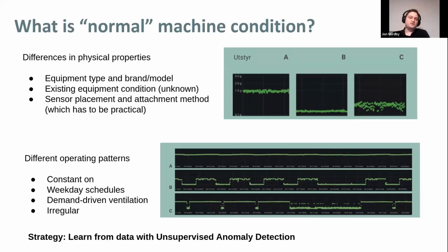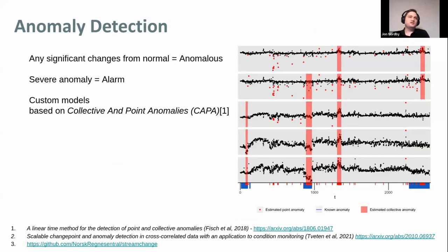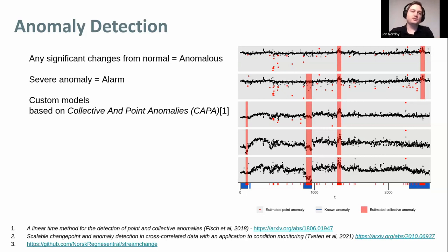To handle this complexity, we use machine learning to automatically learn the patterns of a particular device using unsupervised anomaly detection. In anomaly detection, we learn the normal pattern and any change from that is considered anomalous. If it's a severe anomaly — meaning it has a high anomaly score — and it persists for a longer period of time, typically more than one hour, then we consider this as an alarm. We have tested many approaches and are currently mostly using custom models based on the CAPA framework, which is specifically designed to handle collective anomalies — longer periods of time in an anomalous state — indicative of a machine state change or condition change.